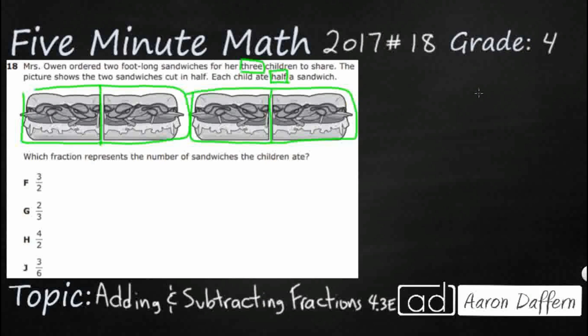We are looking for the fraction that represents the number of sandwiches that the children ate. What we're not looking for is the fraction that represents the number of sandwiches that Mrs. Owen bought — that's a different answer. Mrs. Owen bought two foot-long sandwiches, which is actually pictured on the screen right there. We're looking to see what the children ate.